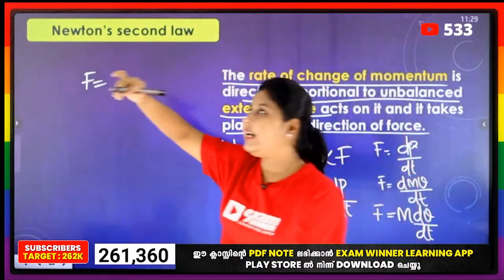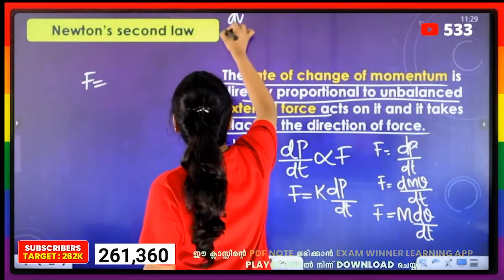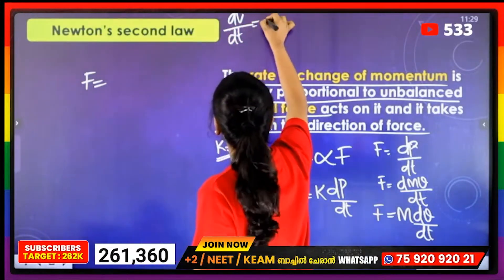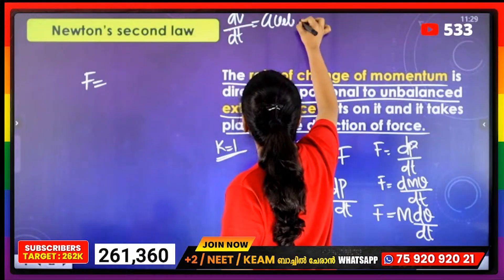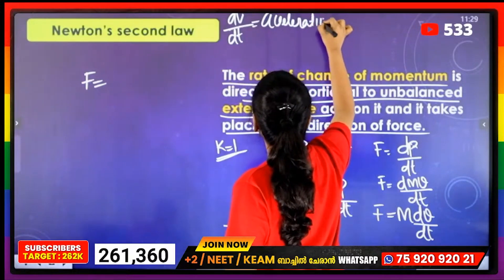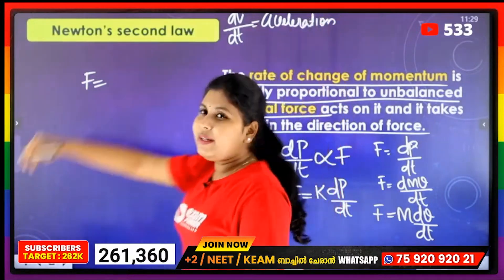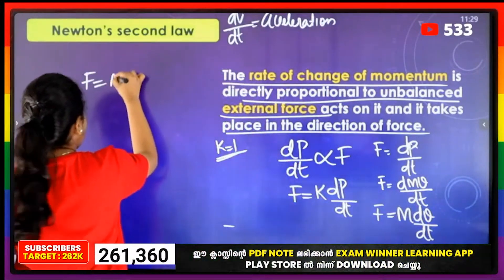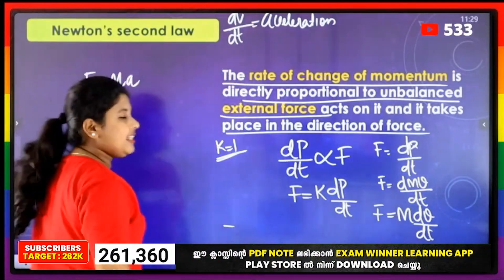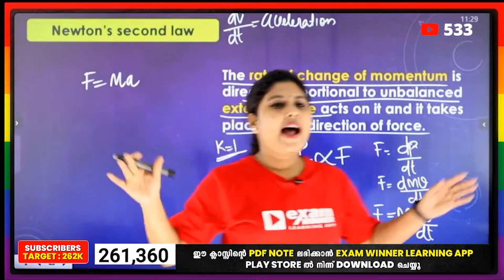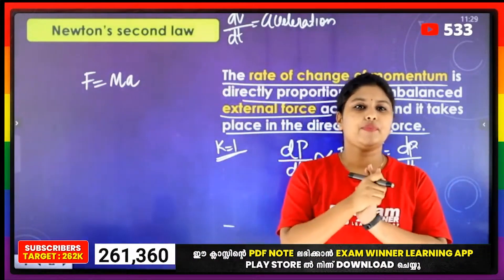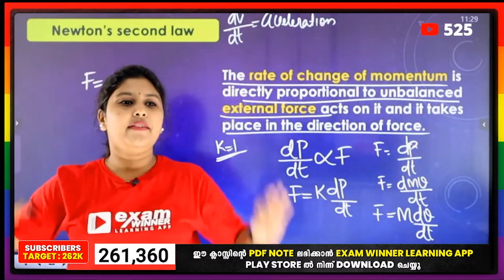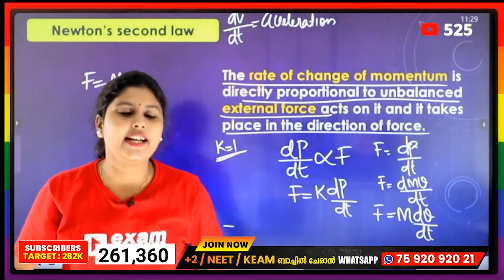Acceleration — dv by dt is acceleration, that is a. So F is equal to mass into acceleration. This is the equation, this is the derivation — now we have studied this derivation.